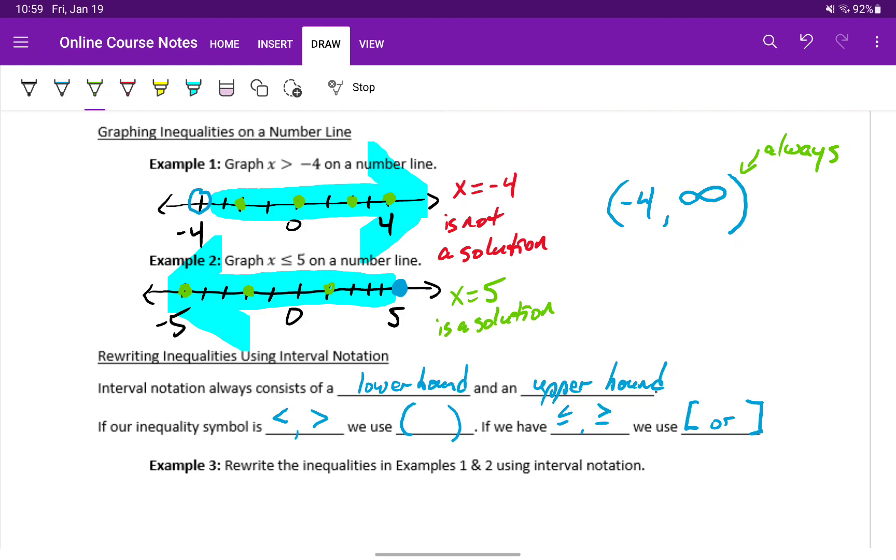Looking at example two, we have x is less than or equal to five. That means our upper bound is going to be five. That's the largest possible value. Since five is a solution, we use the filled in circle on the number line, and we're going to use the square bracket on our interval.